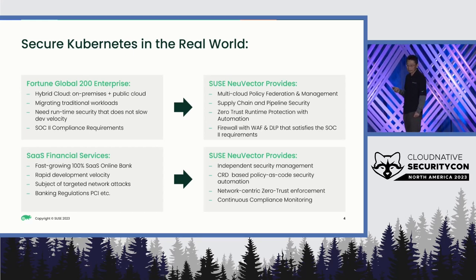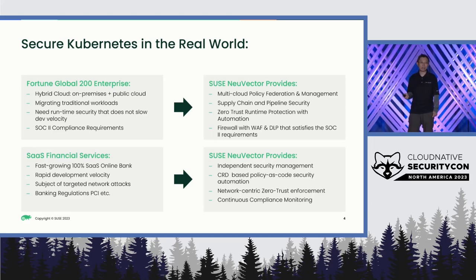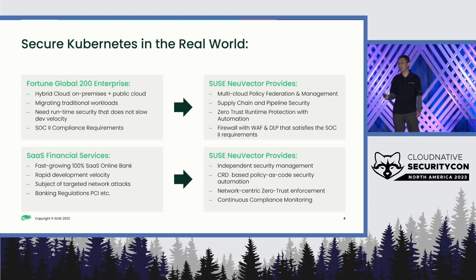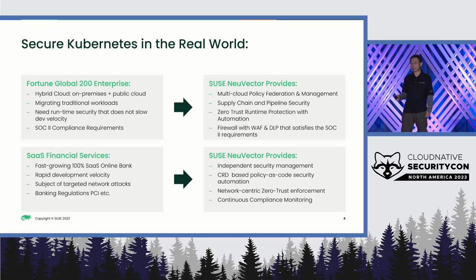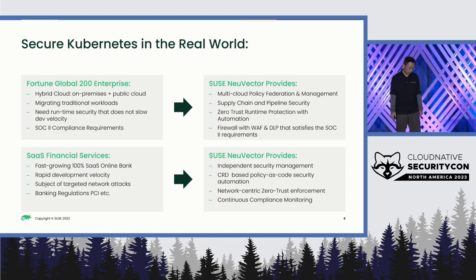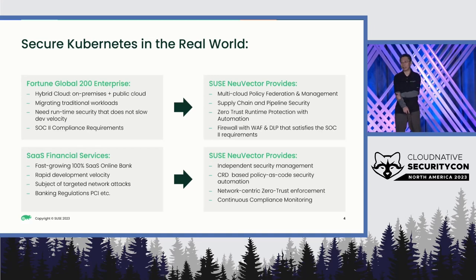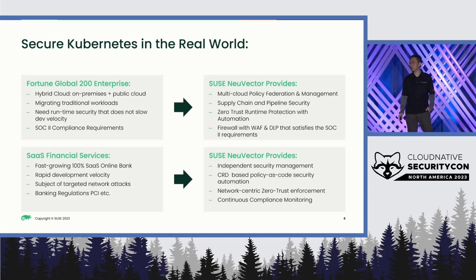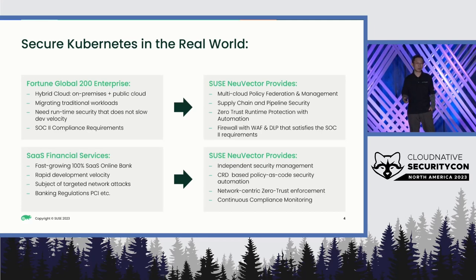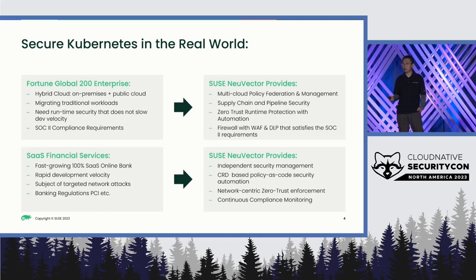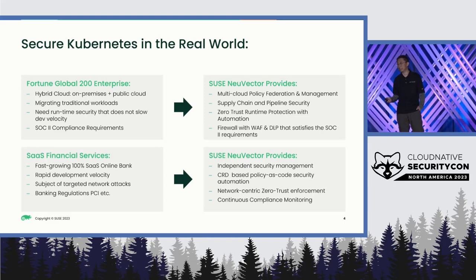Another strong requirement is that those applications in production are mission critical — basically the company's most important assets. It does require strong runtime protection in place. So they use zero trust runtime protection with security automation to make sure it's not slowing down the DevOps process. There are also compliance requirements at play. For those mission-critical workloads, there are all kinds of compliance requirements in different countries and industries. To satisfy that, they use a layer seven container firewall with WAF and DLP enabled, which helps them pass auditing for, for example, SOC 2, PCI DSS, or HIPAA.